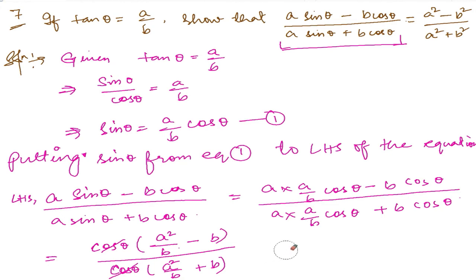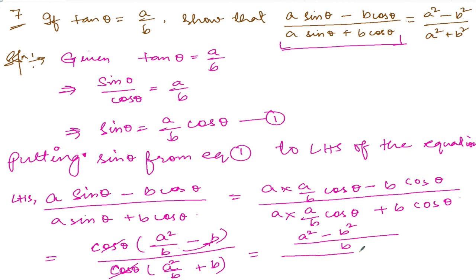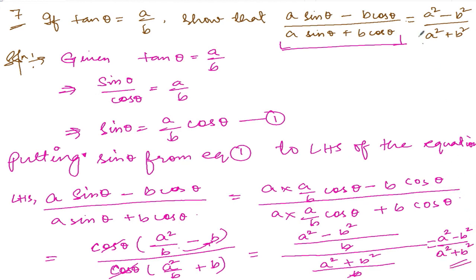So what we can write down is: the denominator is b, so write b; the numerator is a squared minus b squared — since b multiplies b gives b squared. Making the denominator the same, b cancels, and we get a squared minus b squared divided by a squared plus b squared, which equals the right hand side.